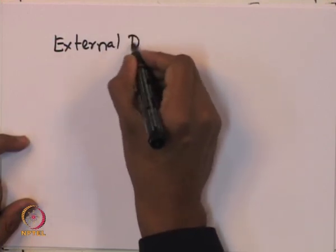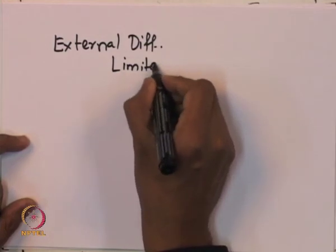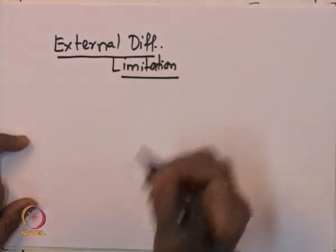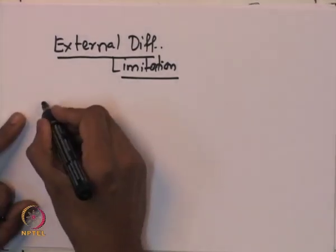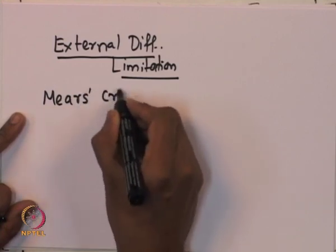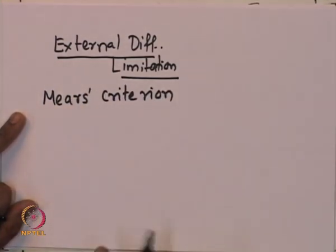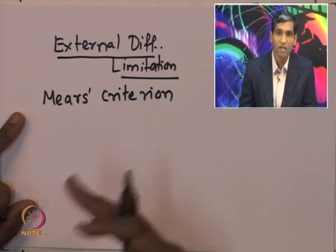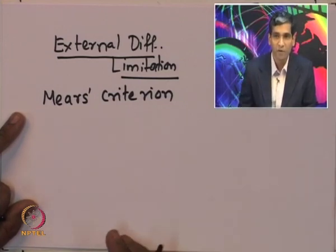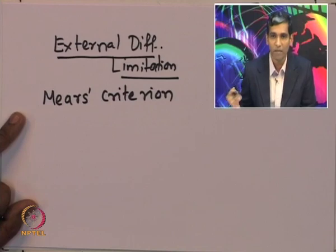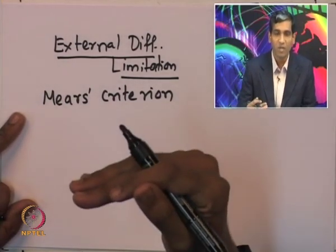In this way, using trial experiments, one can find what pellet size should be used so that internal diffusion does not affect the reaction severely. Now let us move on to external diffusion. We looked at the method using experimental observable data to determine whether the reaction is conducted under internal diffusional limitations. Next, let us look at the external diffusional limitations.